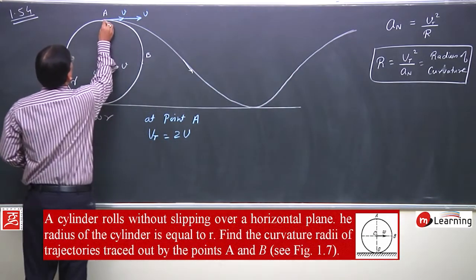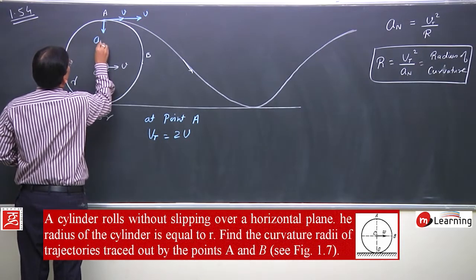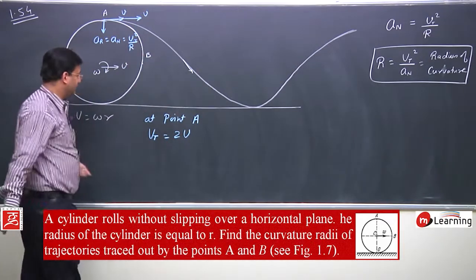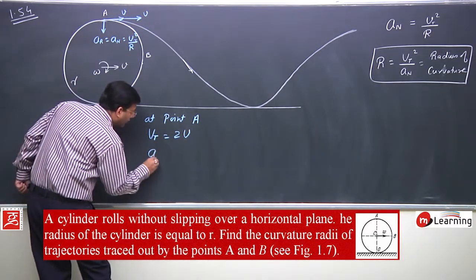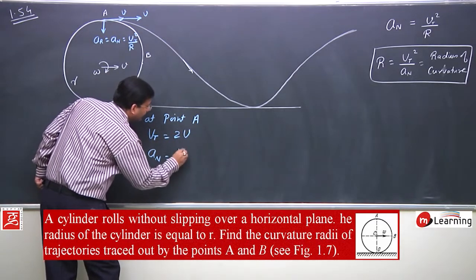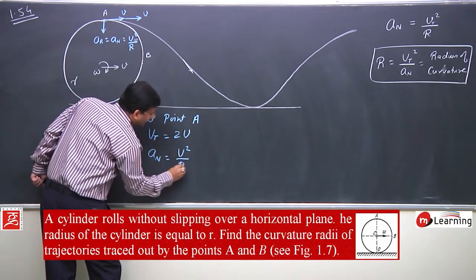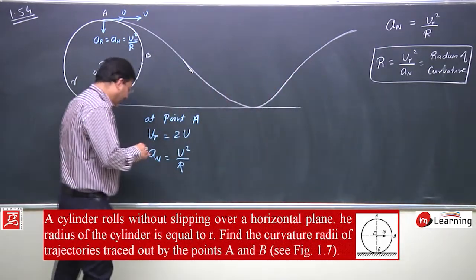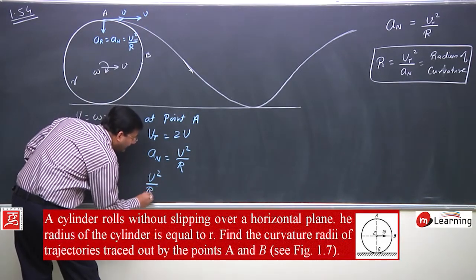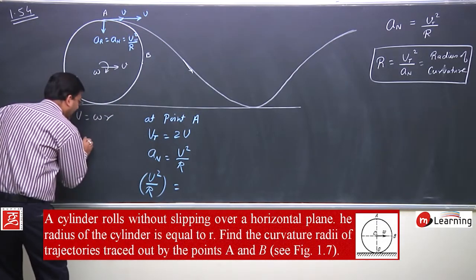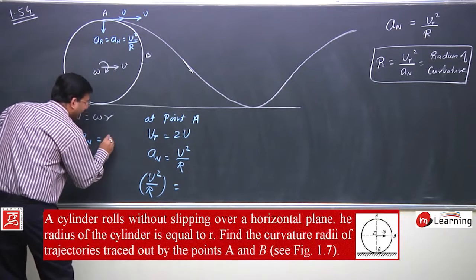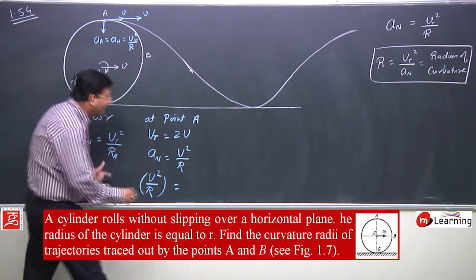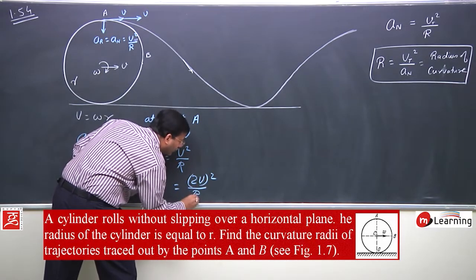What is the acceleration at point A? The acceleration is directed radially inward — this is the radial or normal acceleration, and it is equal to v squared by r. Now, applying the radius of curvature expression at point A: normal acceleration equals tangential velocity squared divided by radius of curvature. So, normal acceleration is v squared by r, and tangential velocity at A is 2v, giving (2v)² divided by radius of curvature at A.